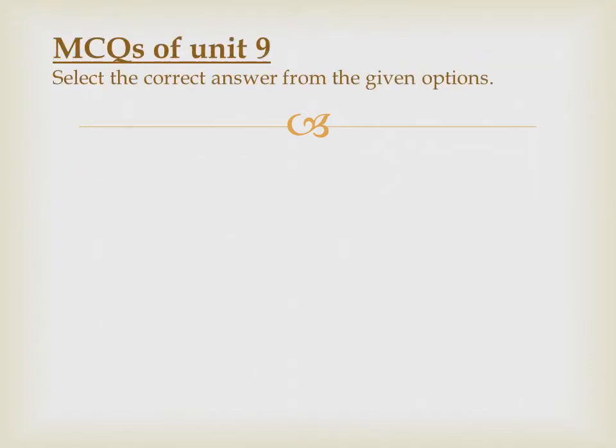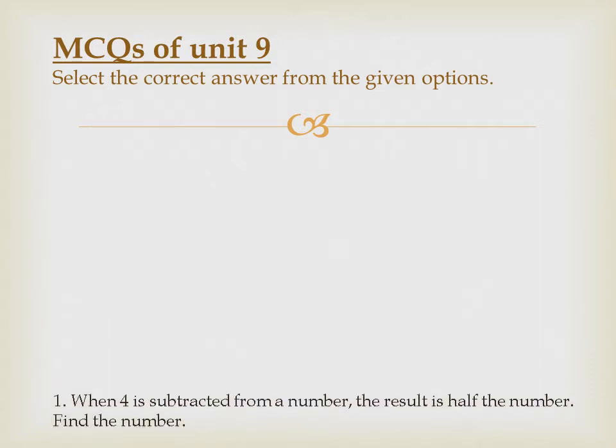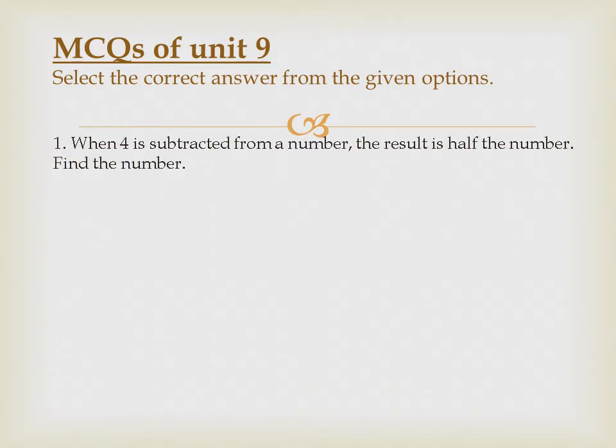We have done chapter number 9. First MCQ is: when 4 is subtracted from a number, let's take the number should be x. When x minus 4, the result is half the number, so what will result be equal to? x by 2.